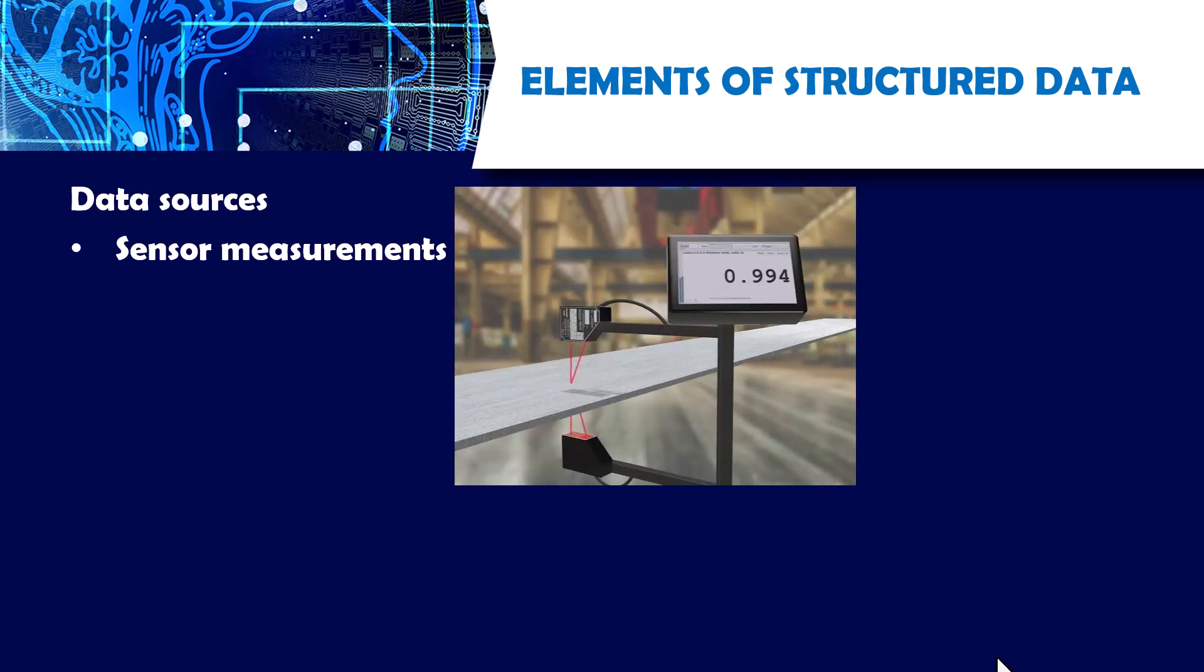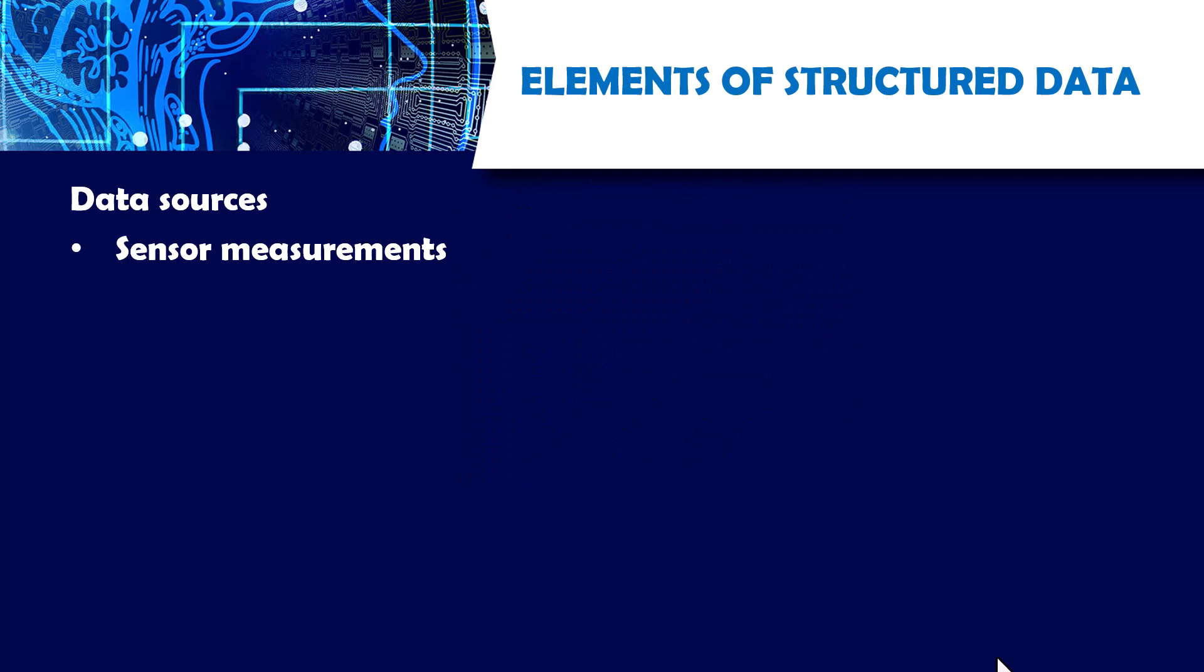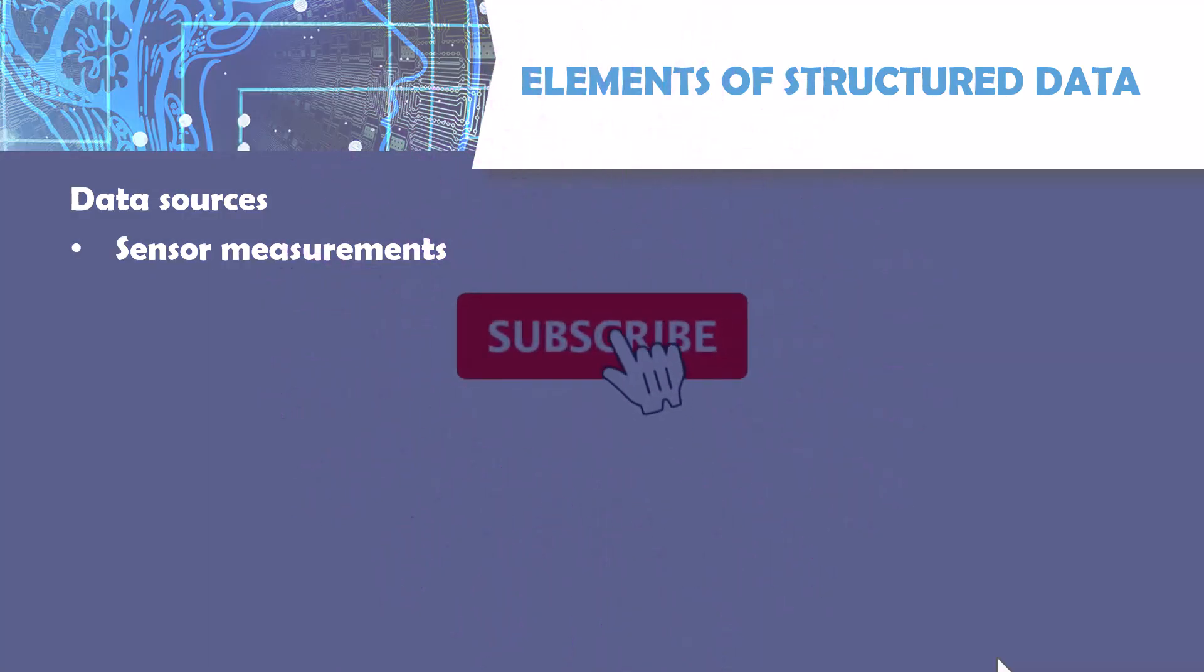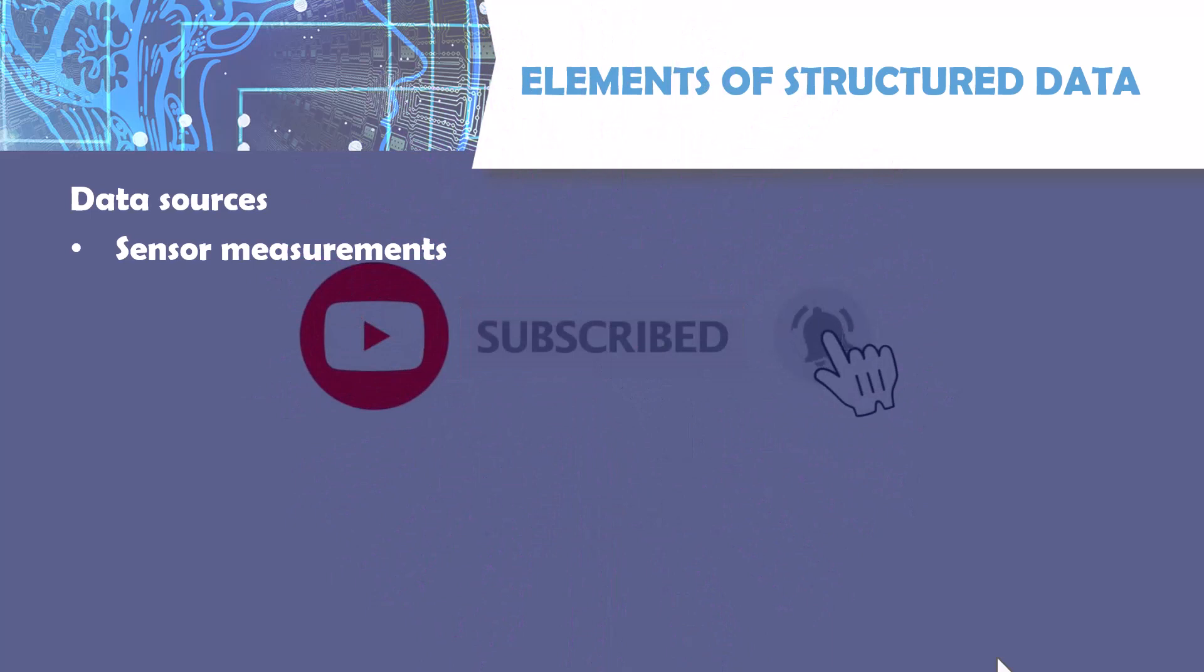The first one is sensor measurements. Sensor measurements include, I'll give you an example of when you're dealing in telematics, car tracking, and other things like electronic components tracking.